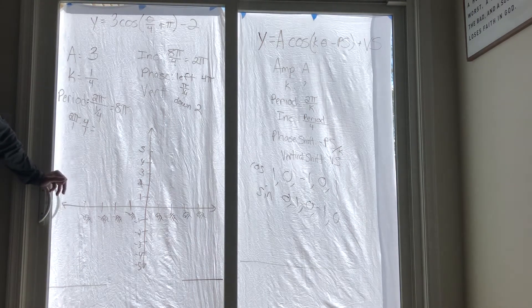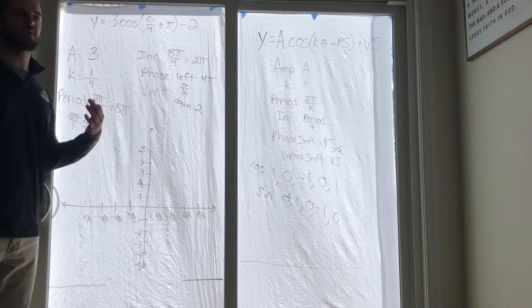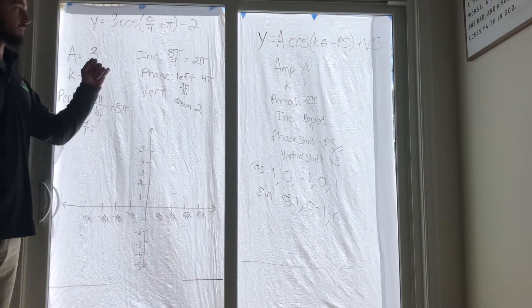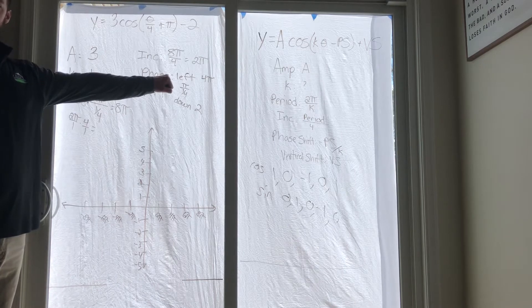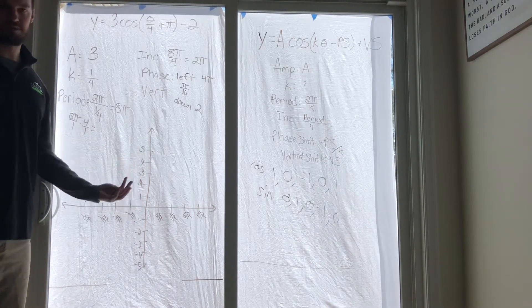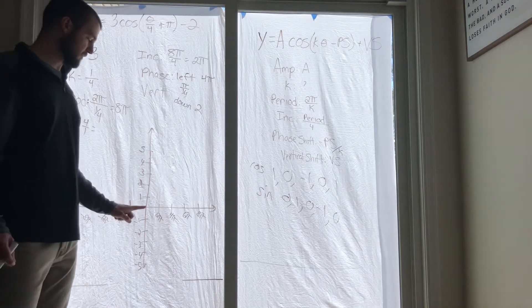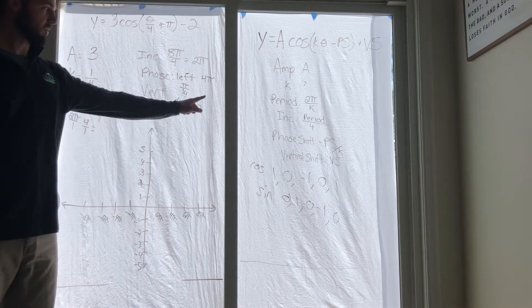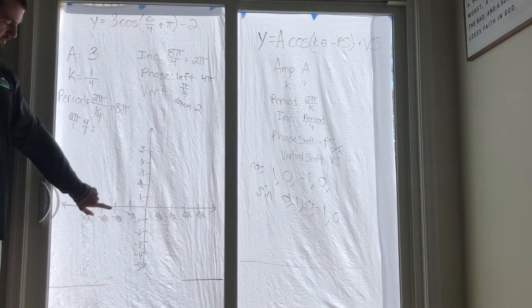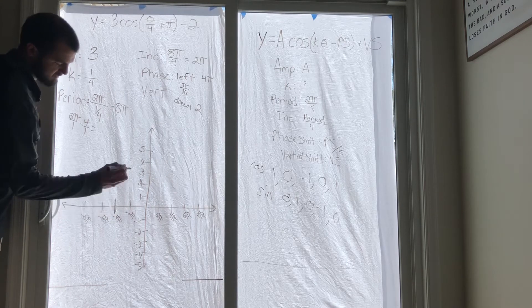Alright, now everything is labeled, so now you're going to graph. What's the first thing you always do when you want to graph? Phase shift, right. The first thing is always phase shift. You have to know where your starting point is - it only makes sense that's where you start. You shouldn't go anywhere else before that. Normally we start at zero, but we need to move left 4π.